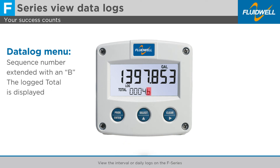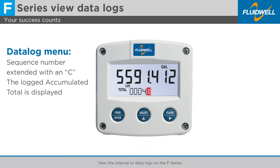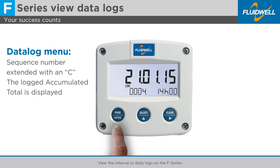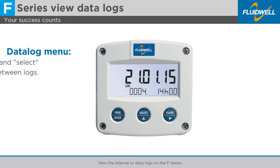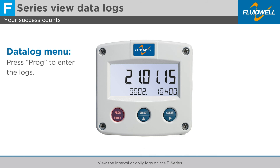Sequence number extended with a B shows the total. Sequence number extended with a C shows the accumulated total. Press PROG to exit this log. Use clear and select again to navigate through the available logs and press PROG to enter them.